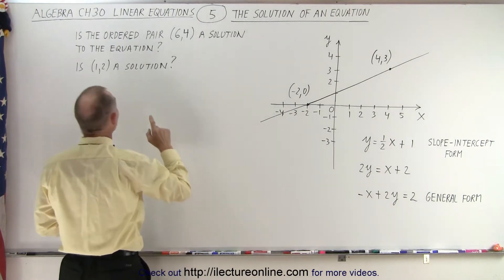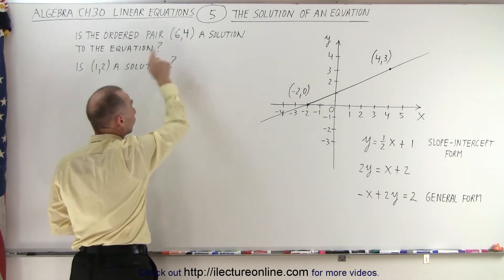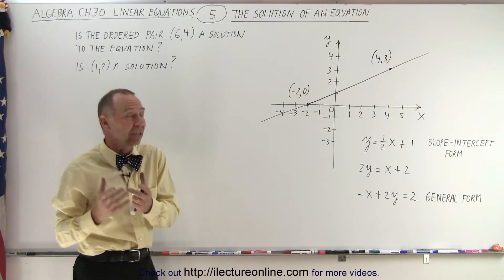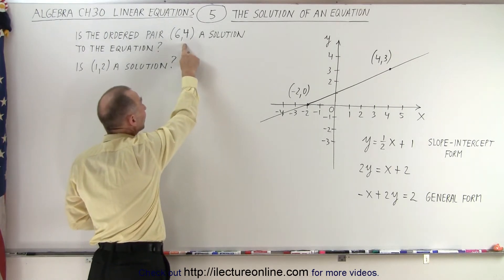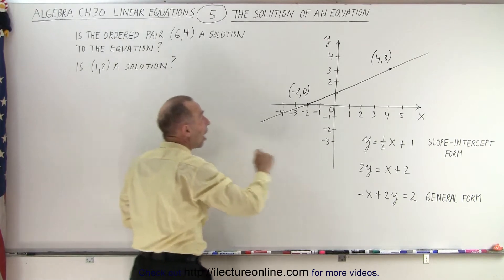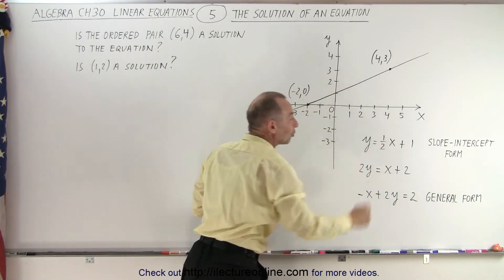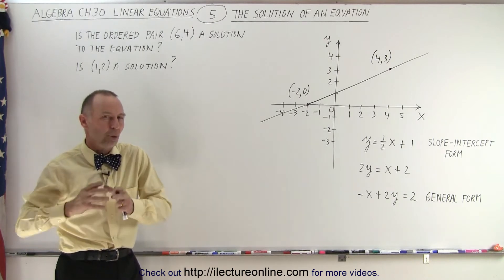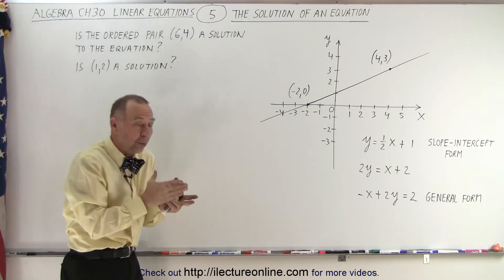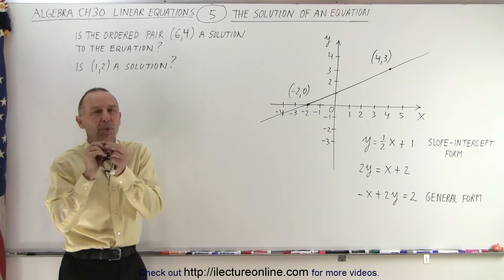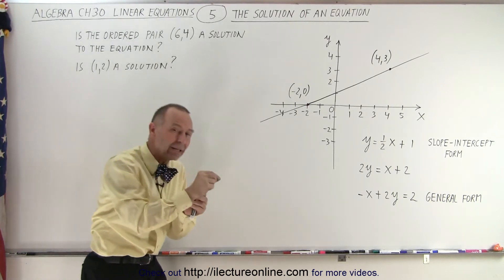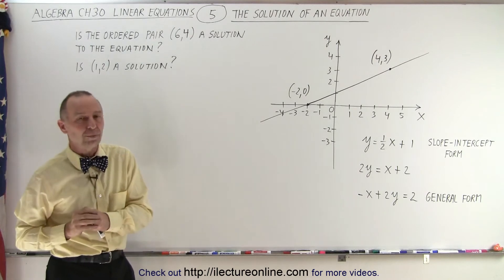Now, if I want to find if this ordered pair is the solution to that equation representing that line, what I'm actually asking is if this point represented by this ordered pair is on the line represented by this equation. So that's essentially what we're asking. If an ordered pair is the solution to an equation, we're simply asking, is the point associated with that ordered pair on the line represented by that equation?